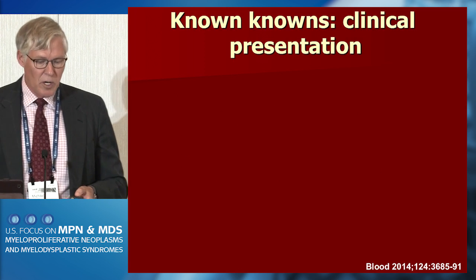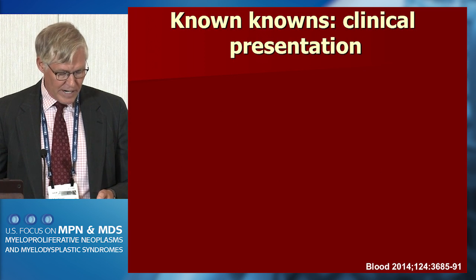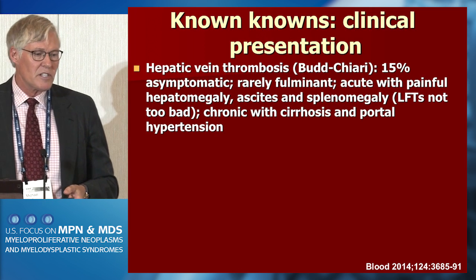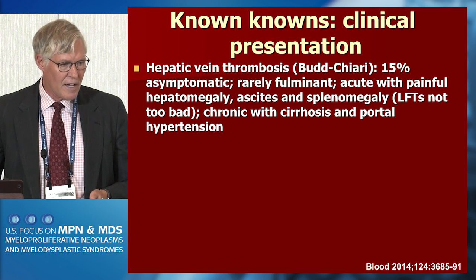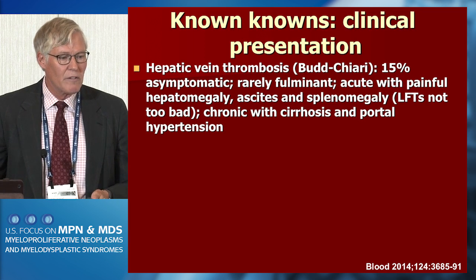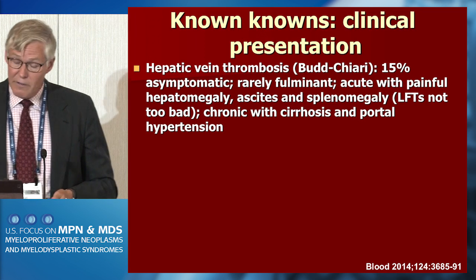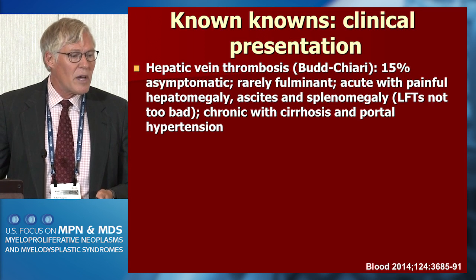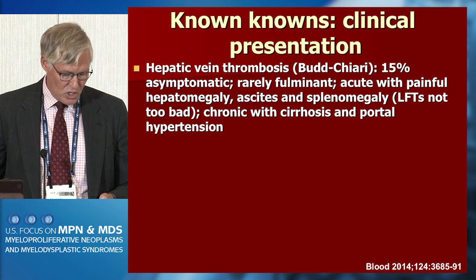The known knowns are pretty well worked out through clinical descriptions available for over half a century. Hepatic vein thrombosis, also known as Budd-Chiari syndrome: a significant percentage are asymptomatic, rarely fulminant, often presenting acutely with painful hepatomegaly, ascites, and splenomegaly. Liver function studies are not dramatically abnormal — it isn't usually a whopping transaminitis. Patients with chronic Budd-Chiari syndrome will develop cirrhosis and portal hypertension.